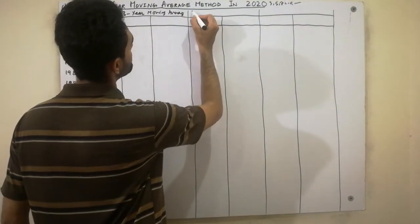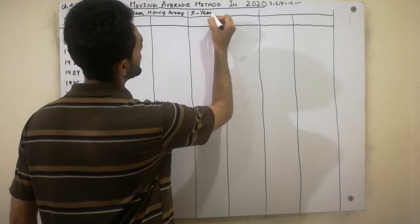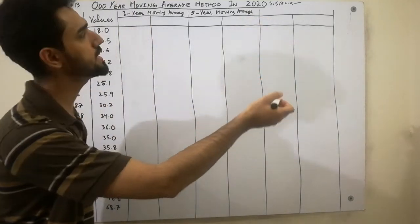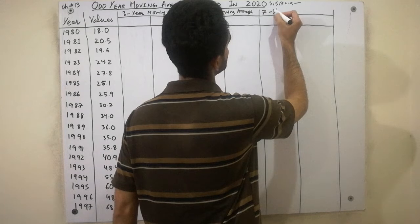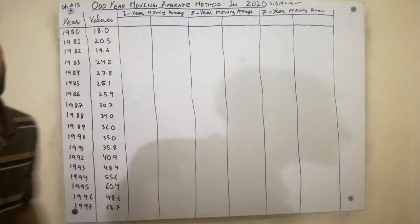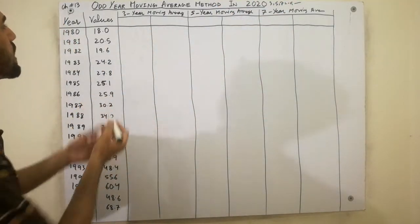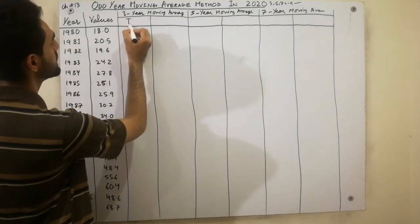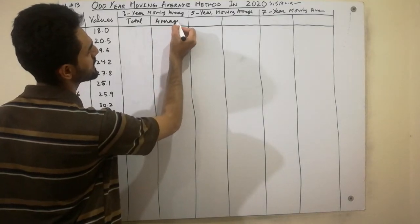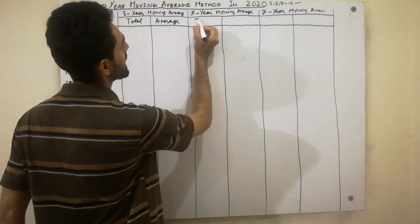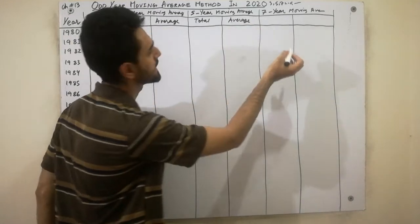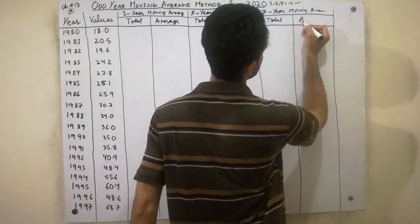Next will be 5-period moving average, and last will be 7-period moving average. After that we have our requirements. First of all we will calculate the total, then we will calculate the average — total and average. Similarly, we will write total and average columns for each moving average type.